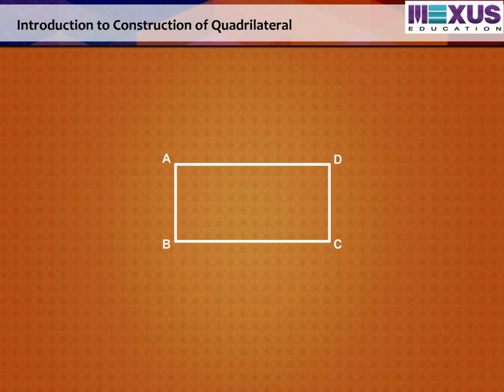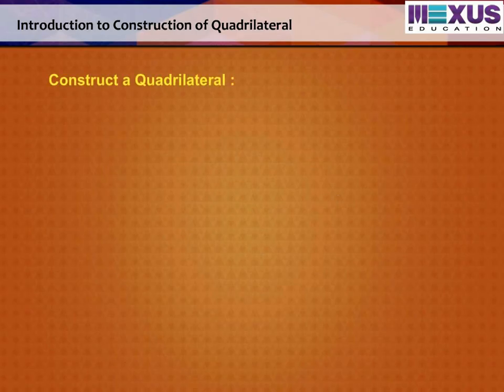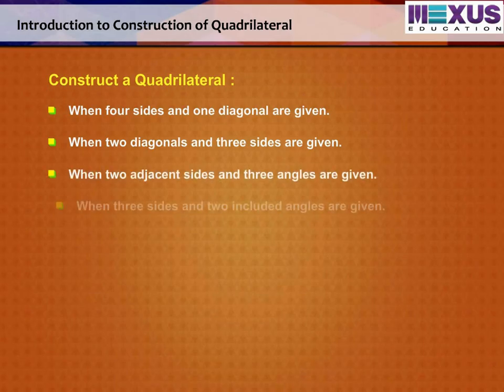In case of special quadrilaterals like the rectangle, just two measurements, the lengths of its adjacent sides, are enough to construct. Now, let us learn how to construct a unique quadrilateral when following measurements are given, one by one.